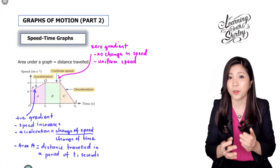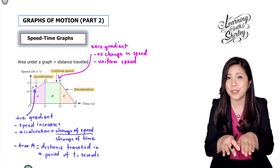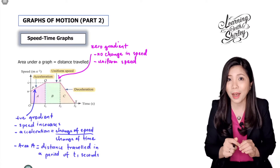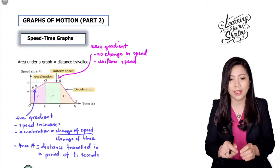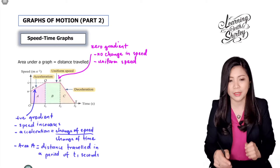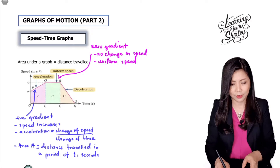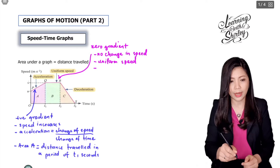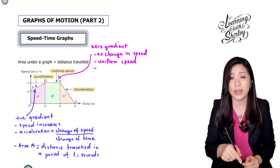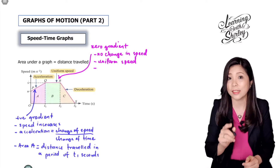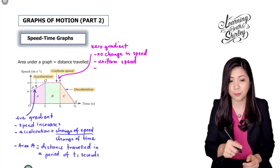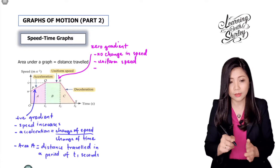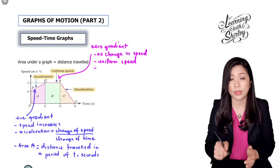Uniform speed means the speed is constant — for example, when you're driving on a highway and you want to maintain your speed at 100 kilometers per hour. That's uniform speed. And the area B represents the distance in a period of T2 minus T1 seconds.